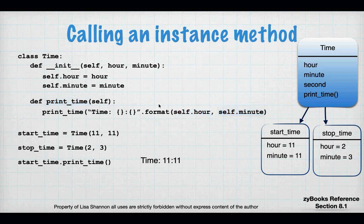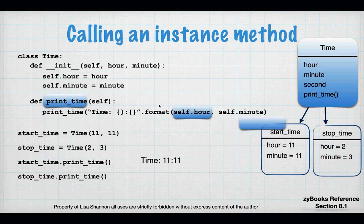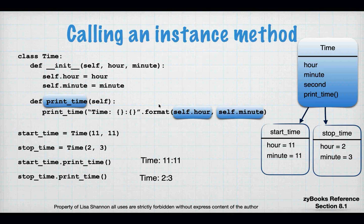If I have another object, I do `stop_time.print_time()` — same thing: object name, dot, the function, open and closing parentheses if there are no other arguments beyond `self`. This time I'm going to get the information from the `stop_time` object, and I'm going to end up printing `2:3` because that's what my print function tells me to do. That's what an instance method is, and you're relying on `self`.